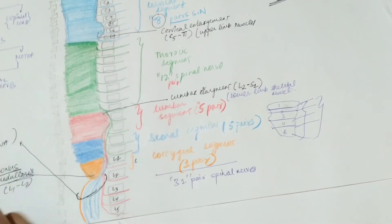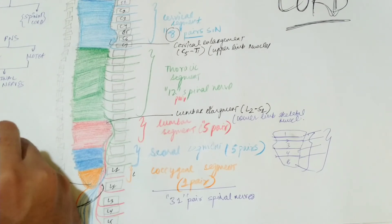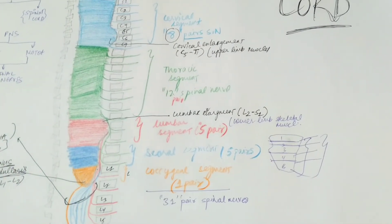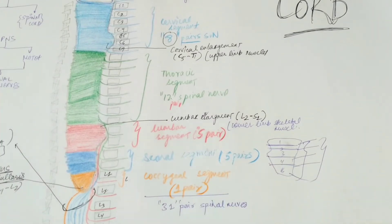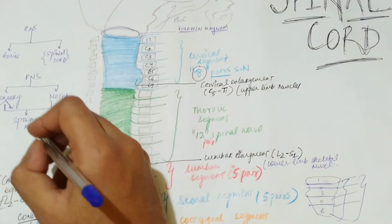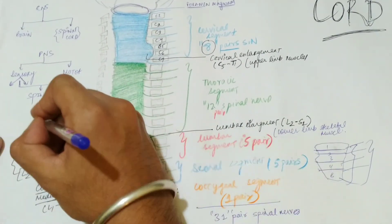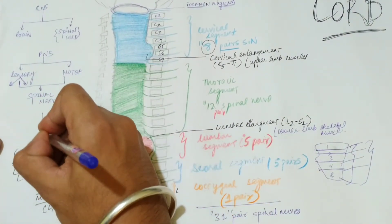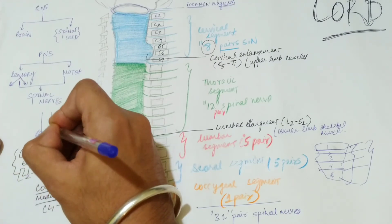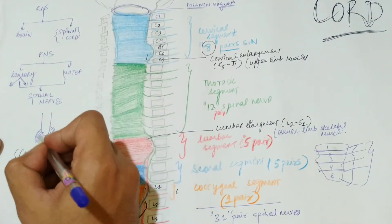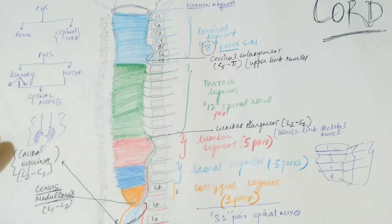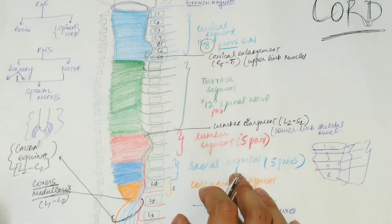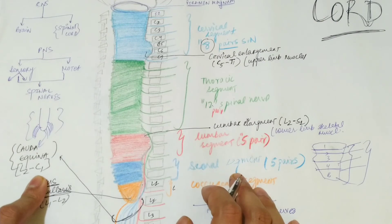The level of the cauda equina is L2 to coccyx one. The conus medullaris is the cone-shaped end of the spinal cord, and the fibers extending from both sides below it form the cauda equina. This appearance resembles a horse's tail, which is why it is called cauda equina.